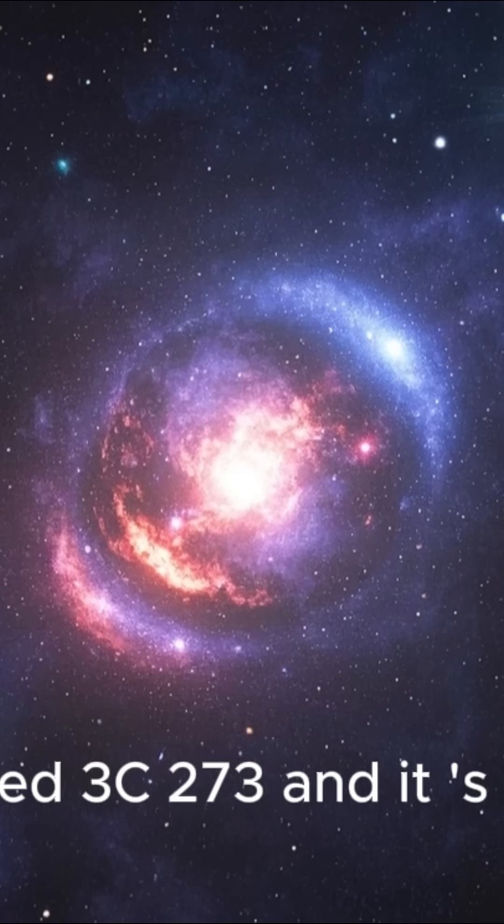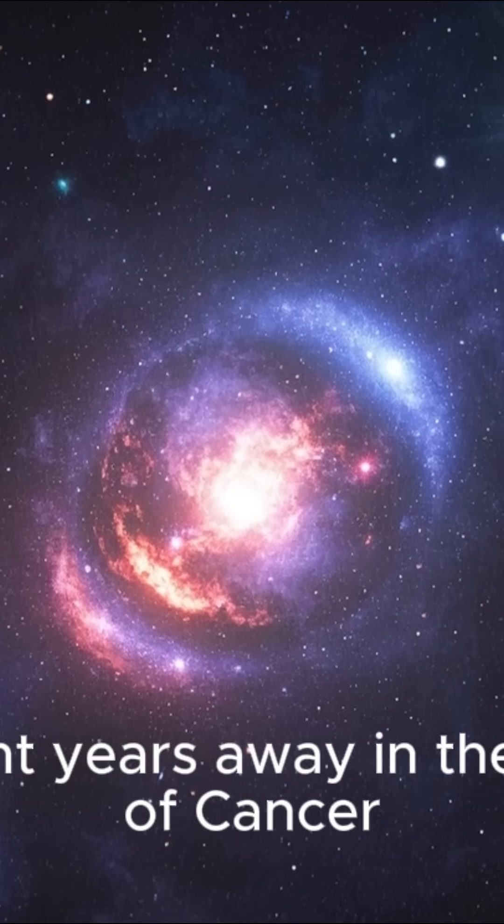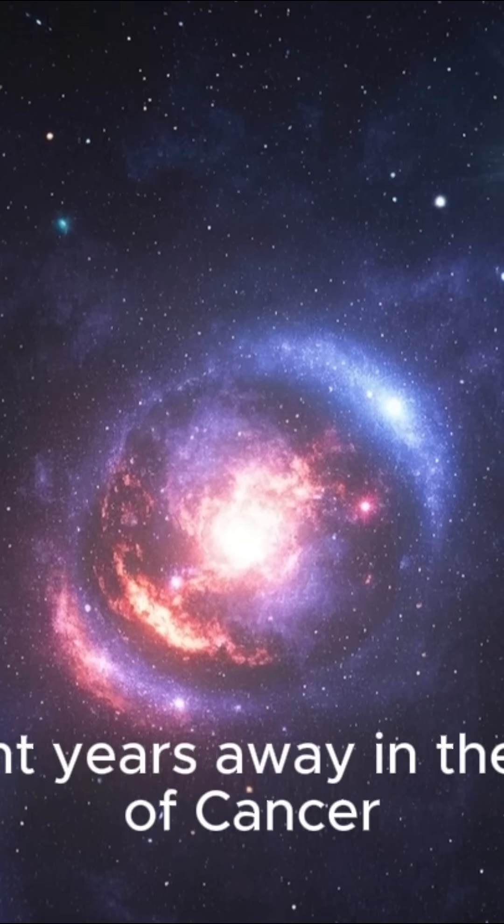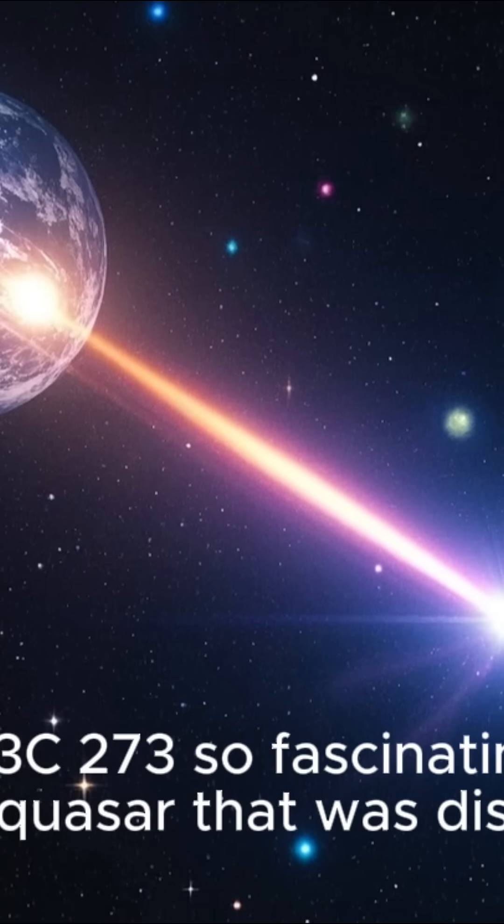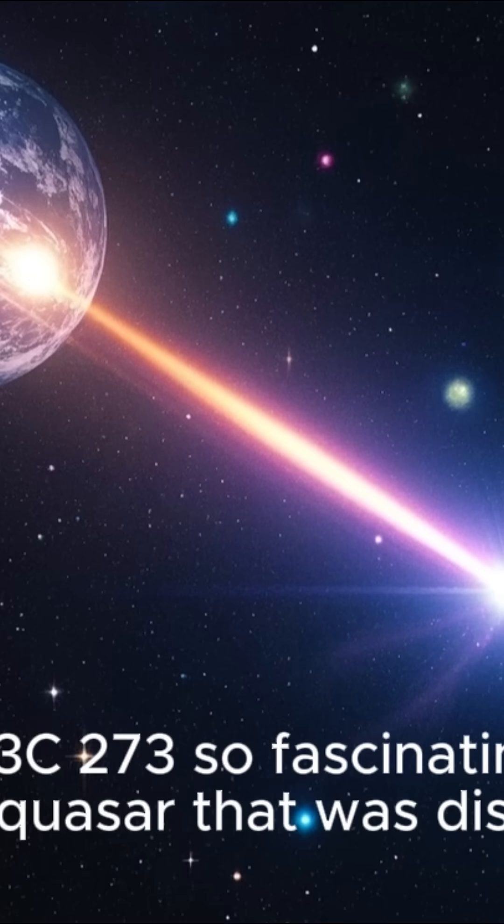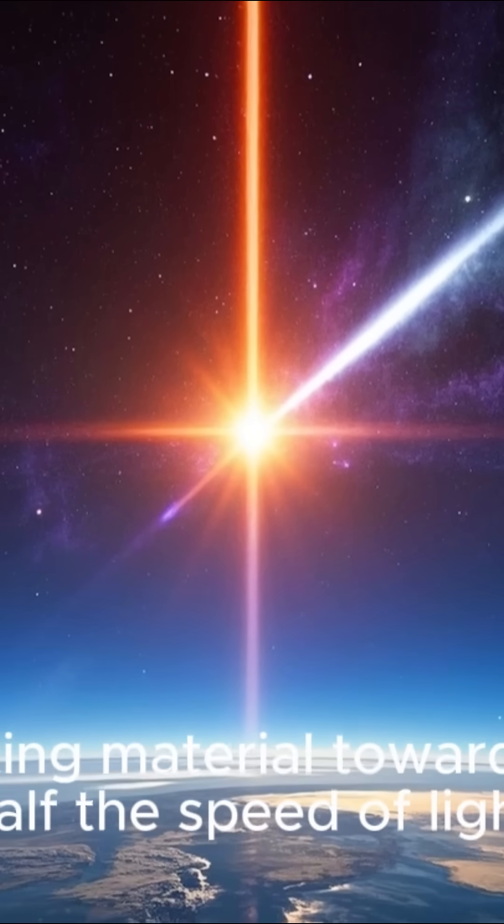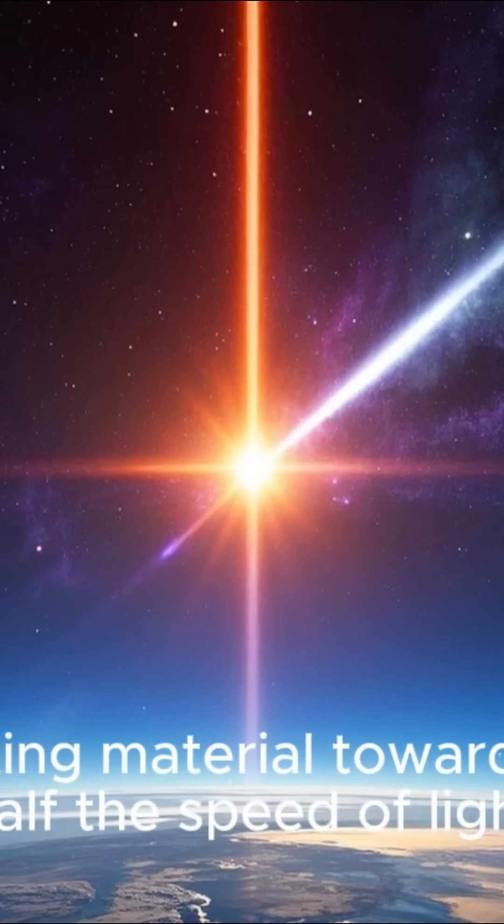It's called 3C273, and it's located 240 million light-years away in the constellation of Cancer. What makes 3C273 so fascinating is that it's the first quasar that was discovered to have a jet pointed directly at Earth. This jet is blasting material toward our planet at half the speed of light.